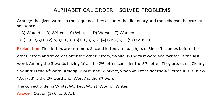Among the 3 words having O as the second letter — Wound, Versed, and Worked — O is the second letter, so you have to consider the third letter. The third letters are U, R, and R. Clearly R comes before U in the alphabet series, so Wound is the fourth word.